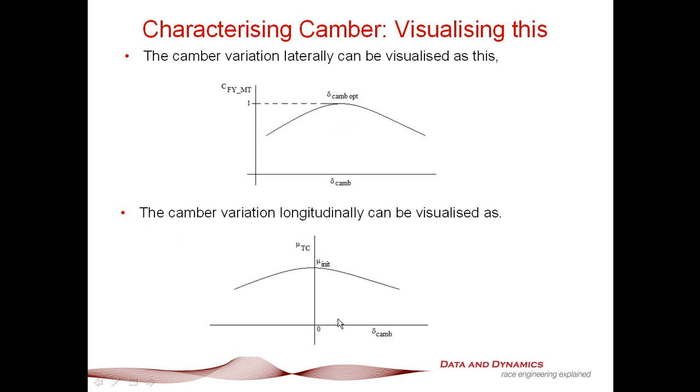For our longitudinal variation, what we've got here is that we've got our mu init, which effectively allows us, is a very handy tool to allow us to scale the traction circle ellipse. And what that represents is the fact that longitudinally, you're going to get your peak longitudinal grip when you stand the tires up.